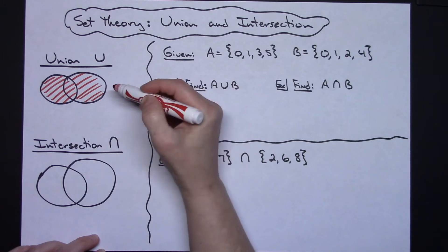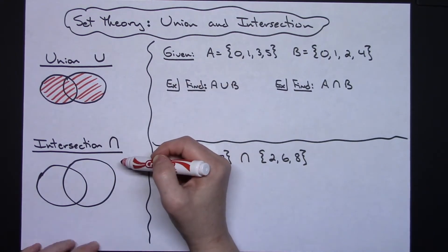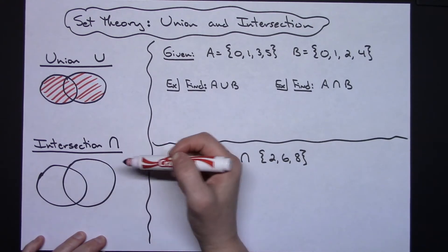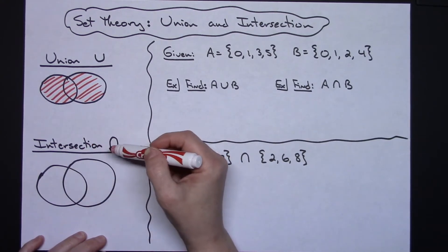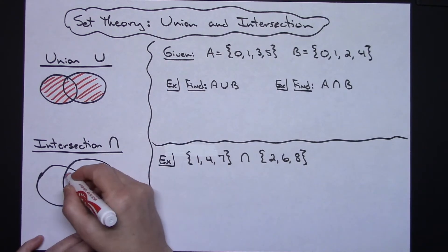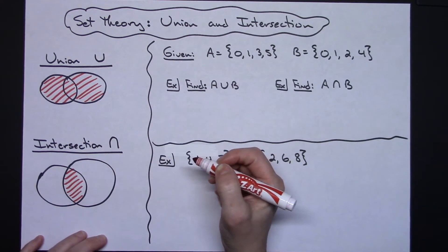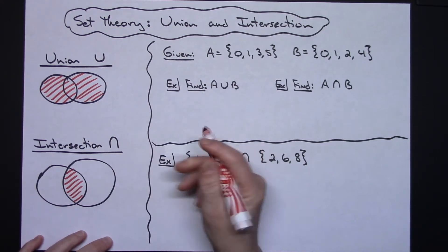So in a Venn diagram scenario, this is what a union looks like. On the other hand, an intersection: if I had two individual sets and I want to look at just the intersection, it would be the part that overlaps of the two sets.